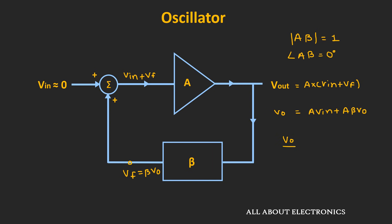If we substitute the value of Vf, then Vout = A × Vin + Aβ × Vout. Simplifying, we get Vout/Vin = A / (1 − Aβ). In an oscillator, no input signal is provided and still we get oscillations, which means Aβ must equal 1 so that this condition is fulfilled. Therefore, the magnitude of the loop gain should equal 1, and the phase shift introduced by the loop gain should equal 0 — proving the two criteria mathematically.